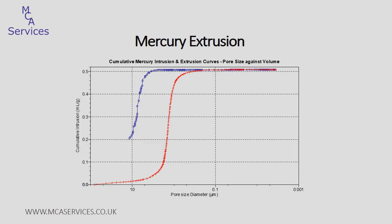Once the ultimate intrusion pressure has been reached — 60,000 PSIA in this case — it's also possible to record the extrusion of mercury from the sample, and this is undertaken by controlling the reduction of pressure back to atmospheric through a series of pre-selected decrements. Comparing intrusion and extrusion curves, and most notably the extent of hysteresis between them, can provide valuable information regarding the geometry of pores and how restrictive a network of pores within the sample may be.